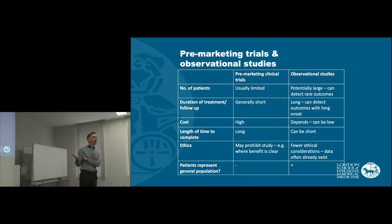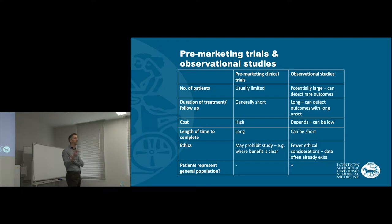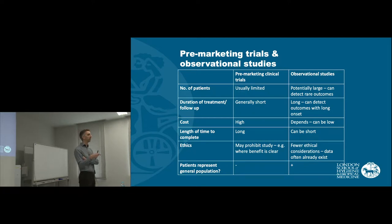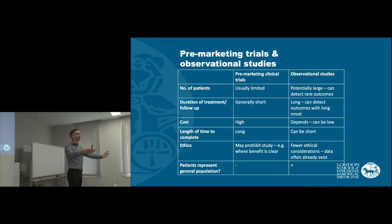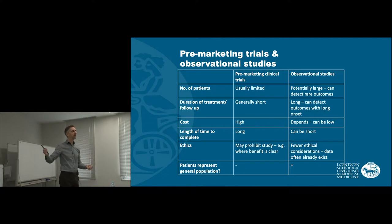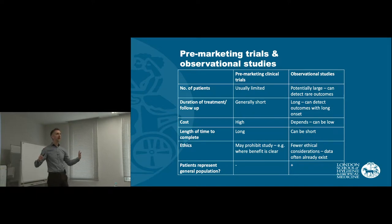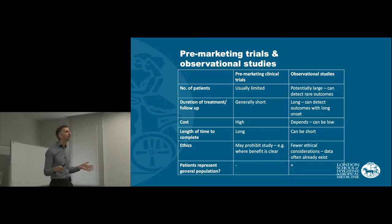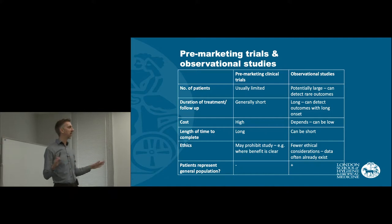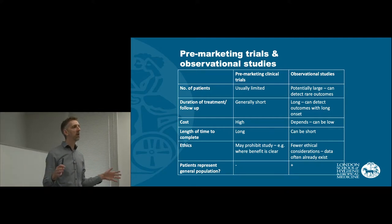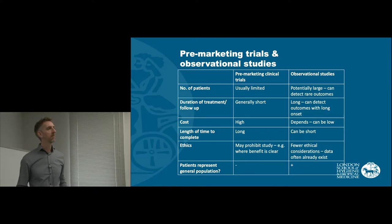Even randomised trials of treatments where we're not going to expose people for very long — maybe six months or a year — they will still take a very long time for the drug company, from starting the trial, enrolling the first patients, continuing to enrol, which can take several years, and then finalising the study. The non-randomised studies, particularly if we rely on data already recorded in the past, will be much quicker to do, although still probably longer than you may imagine, but still much quicker than a randomised trial.